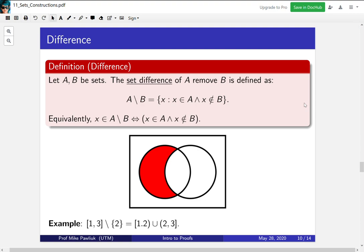Set difference. So the set difference of A remove B is defined as a set of all x that's in A and not in B. So you take all the elements of A and you remove anything that shows up in B.